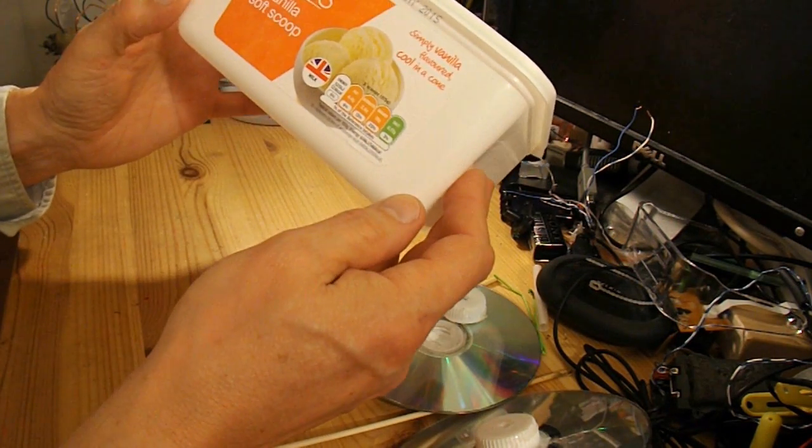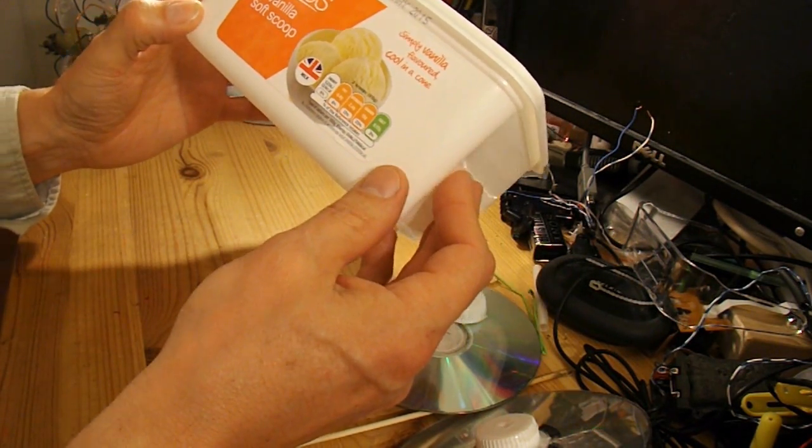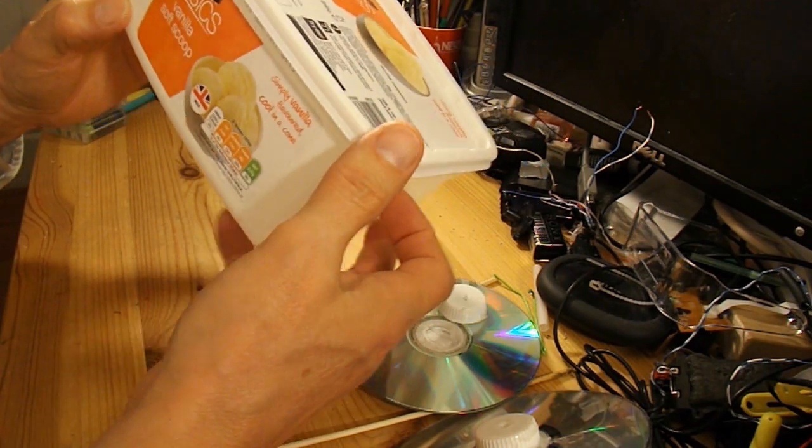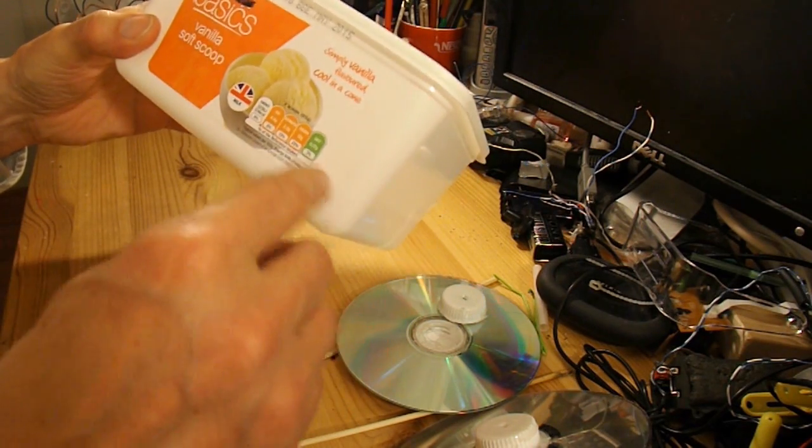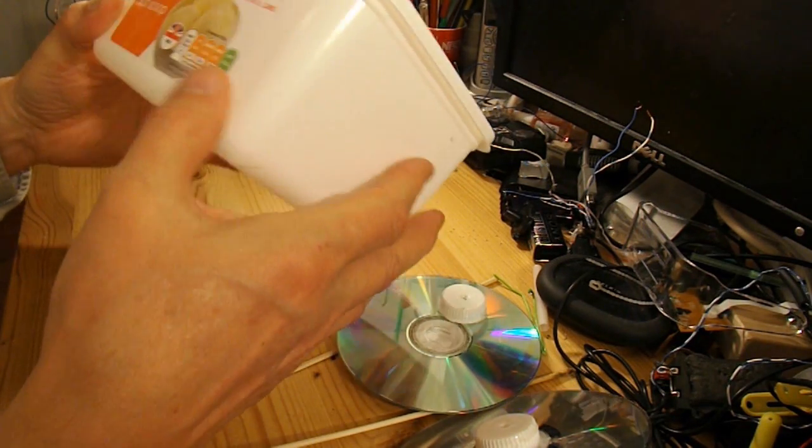I'll need to poke some holes through. I'll put some drinking straws through to hold the axles. That'll help strengthen the plastic because it's quite thin plastic this.